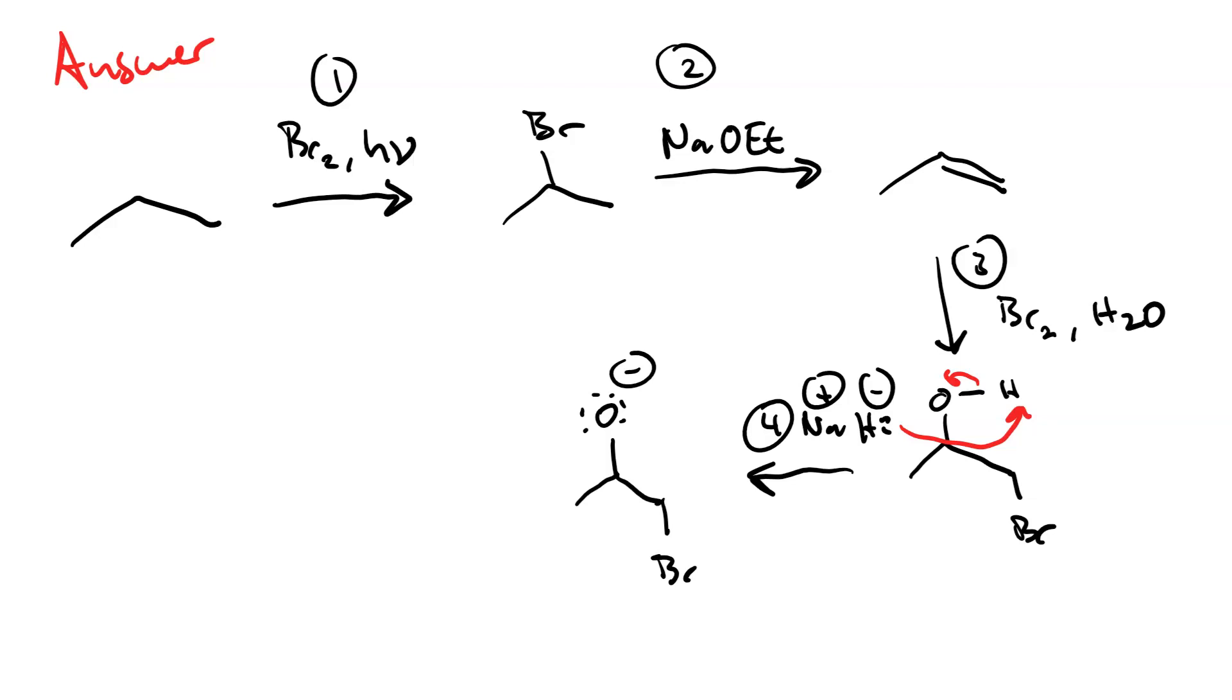So, the alkoxide that's created by the hydride does SN2 attack at the alpha carbon where the bromine is. And, now we've got 2-methyloxorane.